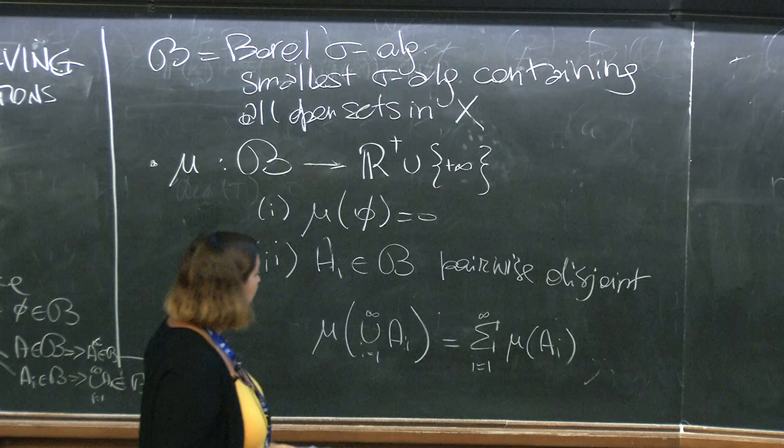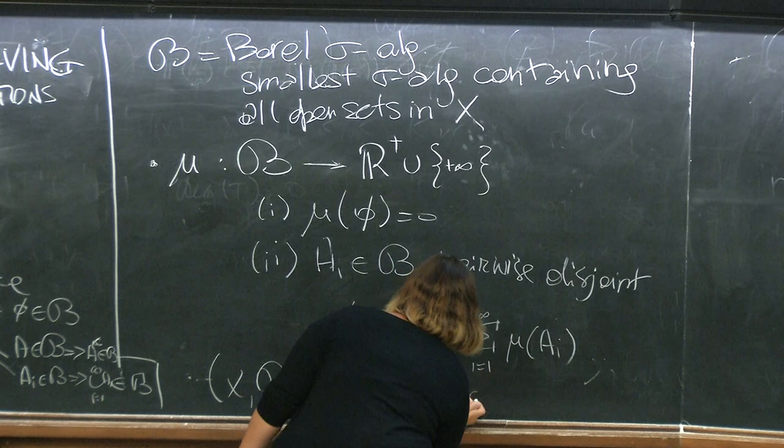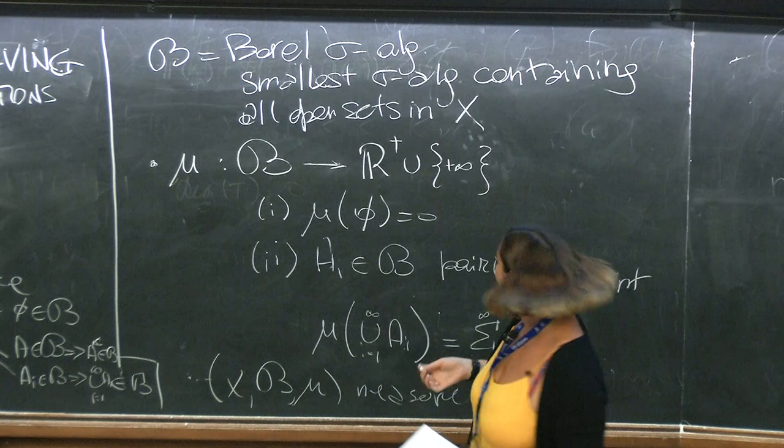And then we will call (X, B, μ) a measured space. So a measurable space is a space on which we can put a measure because we have a collection of sets that are ready to have a measure put on.